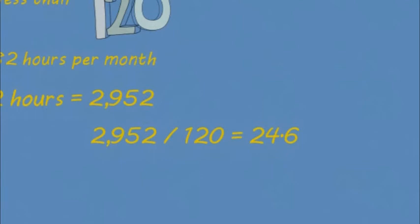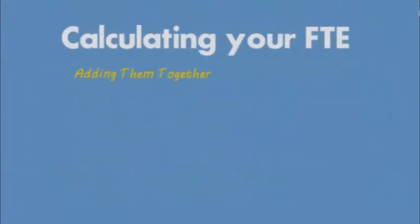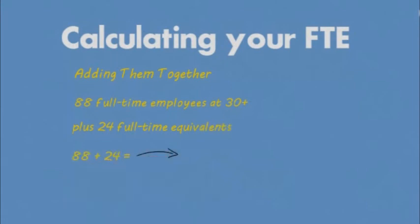This formula gives me 24.6, which rounds down to 24. So, according to the Affordable Care Act, in addition to my 88 full-time employees — the ones that are working 30 or more hours per week — I also have another 24 full-time equivalents that I need to add. This makes my actual FTE count 112, which does in fact mean that I am responsible for the 2015 employer mandate.